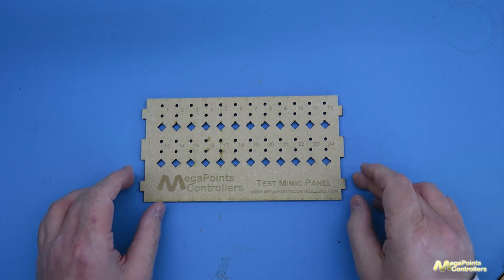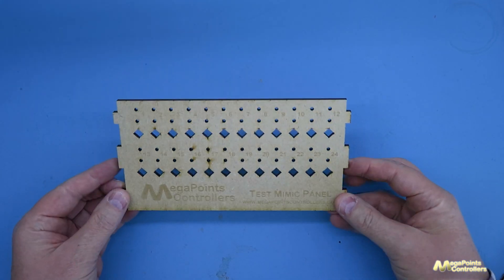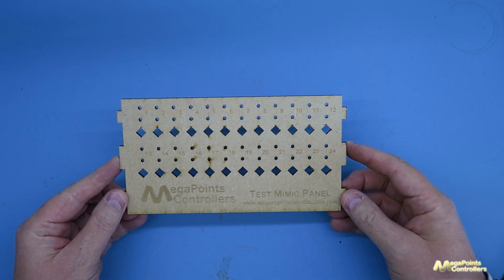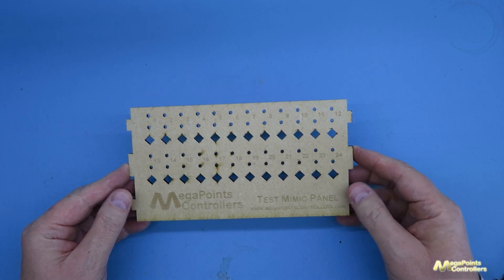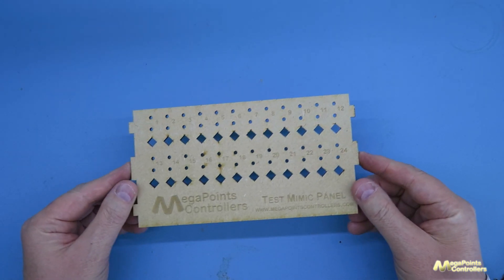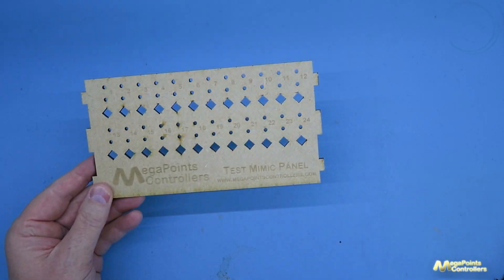This is a new product we have called the Test Mimic Panel and what it allows you to do is to connect up to 24 buttons and up to 24 pairs of LEDs to a temporary mimic panel so that you can operate your multi-panel securely without having leads flying all over the place.